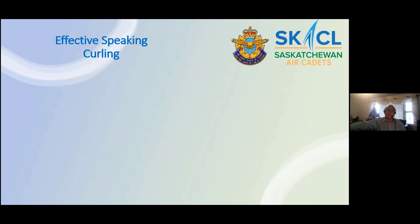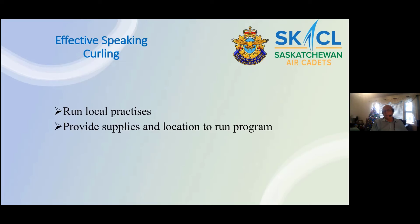Effective speaking has been very positive and has been one of the really great additions that the league has provided. The response from cadets has been really positive — they enjoy the challenge and you can just see them progress through their ability to speak in front of audiences, which really empowers them to be positive young adults. Some responsibilities for effective speaking and curling include running local practices and providing supplies and a location to run the program. With effective speaking, if you can get a few volunteer observers with forms to identify areas for improvement, those types of practice sessions are all great.